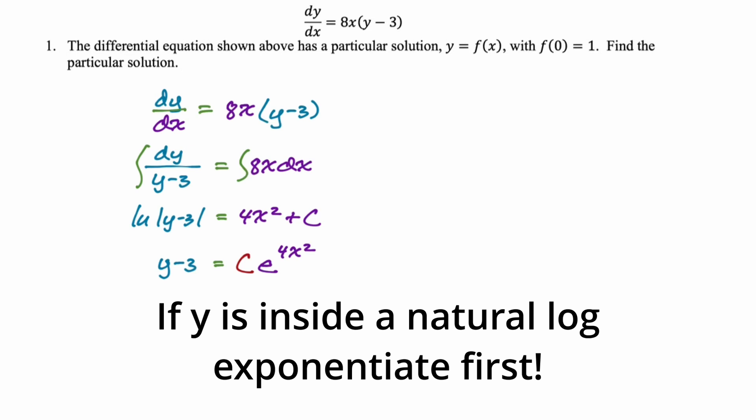So I'm just going to rewrite this thing and say it's y minus 3 is ce to the 4x squared. I have several videos on how to do that. Check them out if you're not sure what I did there.